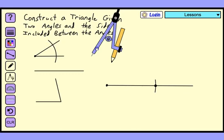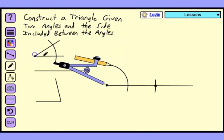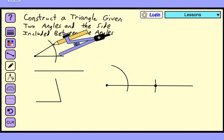Draw that same arc from the endpoint of the line segment. Now set your compass so it matches the opening of the angle from one intersection of the arc to the other.